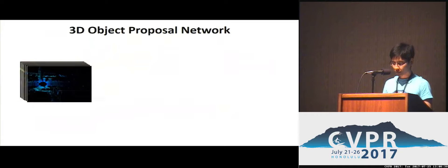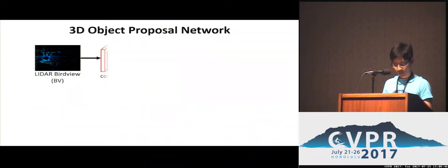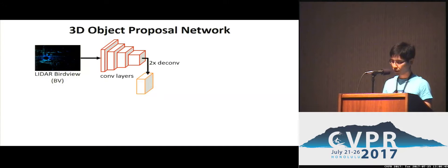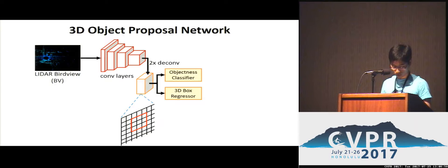In the 3D proposal network, we design a 2D convolutional network to extract 3D proposals from the bird's eye view representation. The bird's eye view map goes through several convolution layers, followed by a convolution layer to obtain high-resolution feature maps. We then apply an object classifier and a 3D box regressor to each spatial prediction of the feature maps.